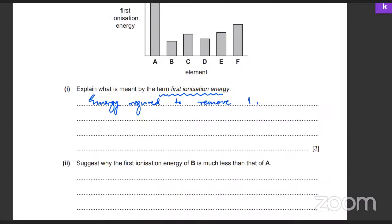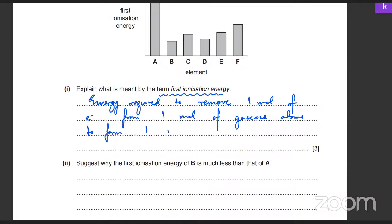To remove one mole of electrons from one mole of gaseous atoms to form one mole of gaseous ions.